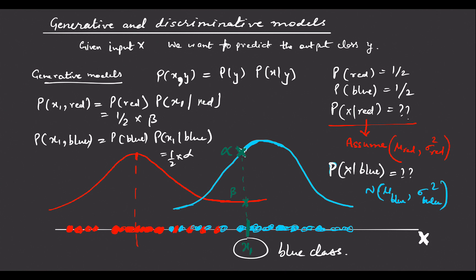Since probability of red and probability of blue are equal in this case, all points to the right of the boundary line shown in pink will be predicted as blue, because the blue curve is above the red curve there. And all points to the left of this line will be predicted as red. This is how the generative model works.